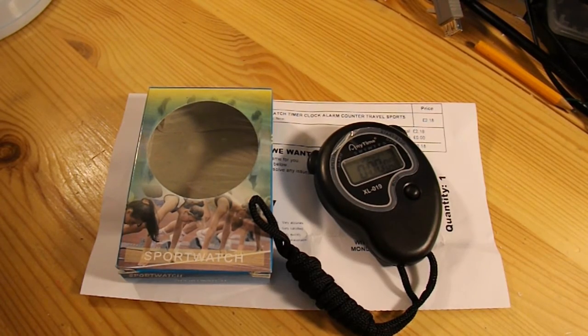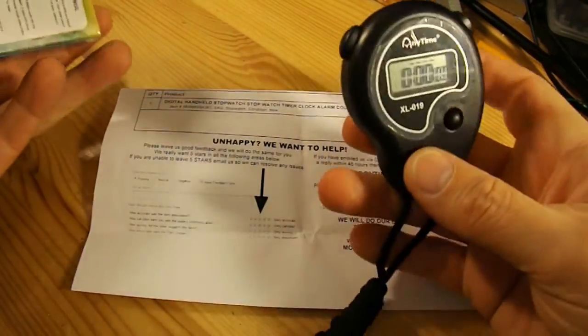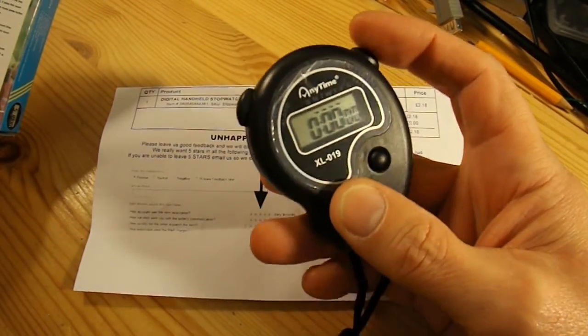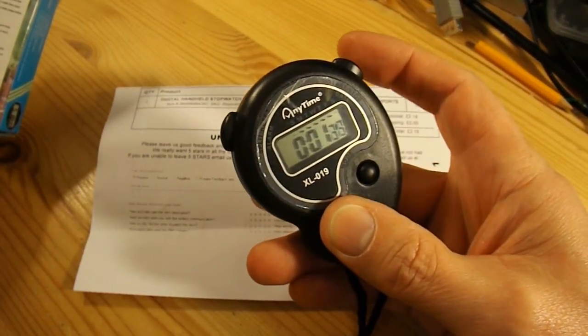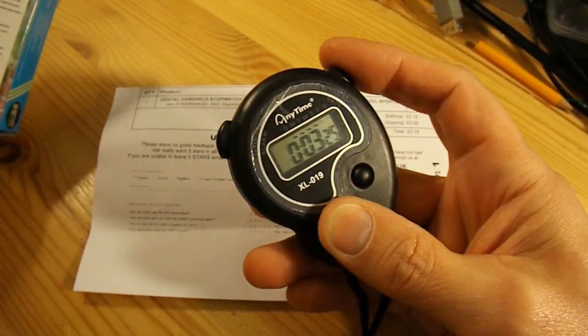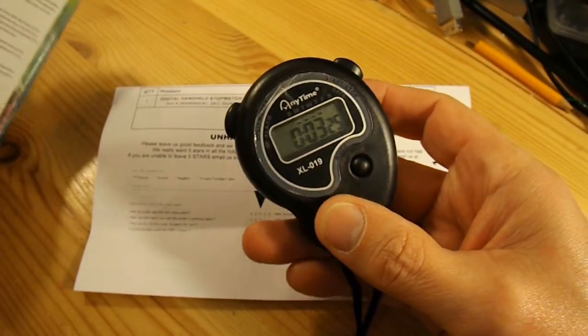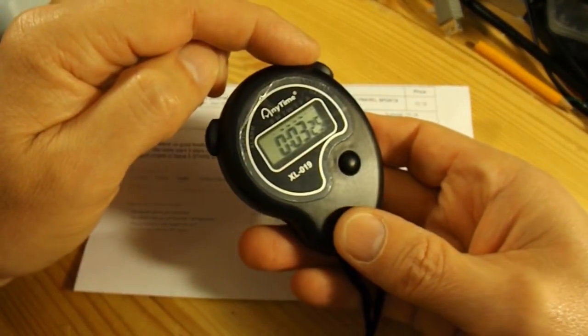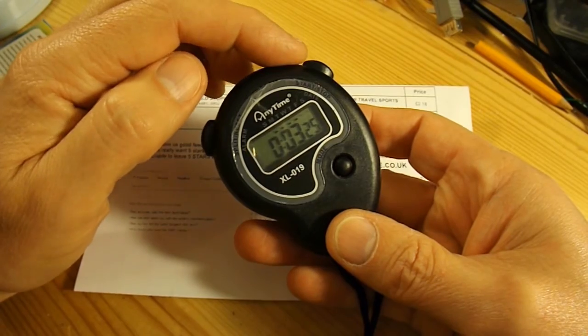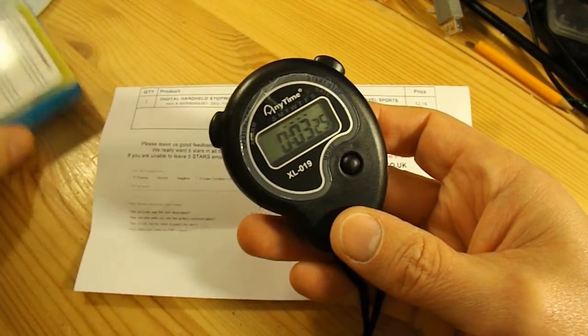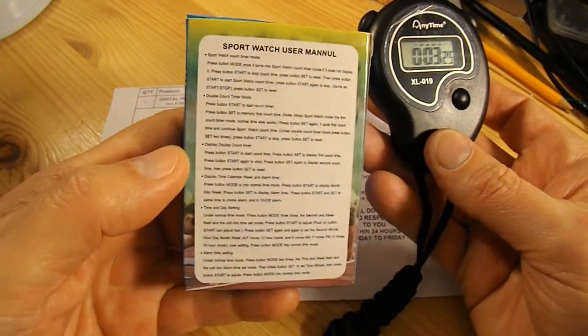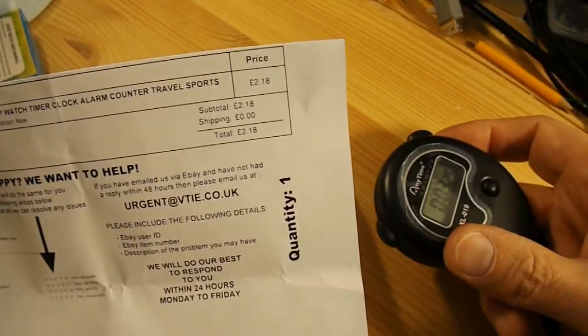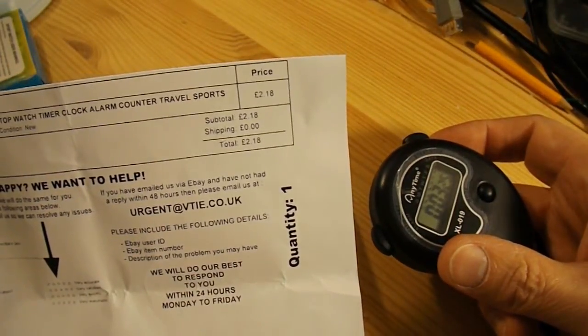First component arrived in the post today, it's this digital handheld stopwatch which is very simple. Press the button and it starts counting, press the button again and it stops. The intention will be to intercept that button and use some sort of laser trigger to switch it on and off. I've got full instructions here on how the stopwatch works and it cost me £2.18, shipping free.